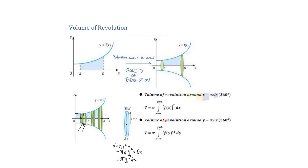If the volume of revolution is about the y-axis, you make x the subject and express the function in terms of y. Then you square that function, integrate with respect to y, apply the y-value limits, and multiply by π to get the volume.